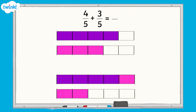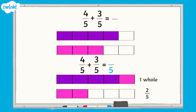It is one whole and two-fifths. Remember, when we add fractions with the same denominators, we just add the numerators and the denominator stays the same. So for four-fifths add three-fifths, the denominator — five — stays the same, and we add the numerators, four and three, which equals seven.